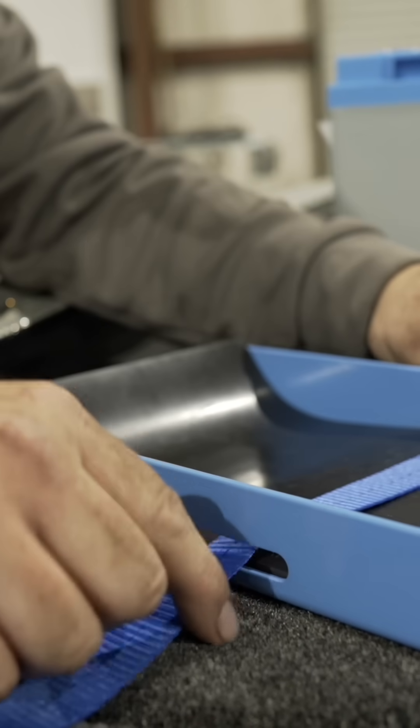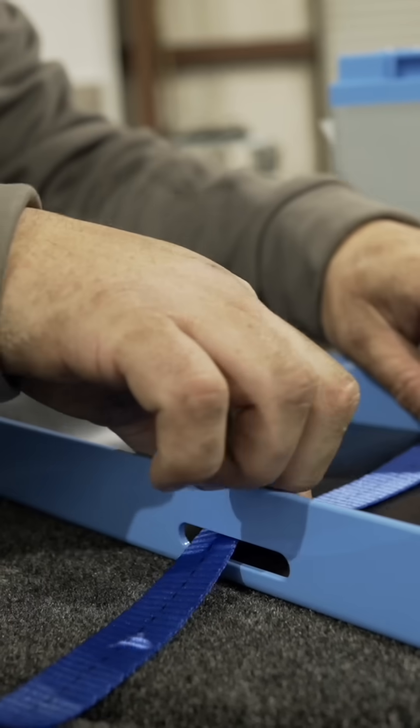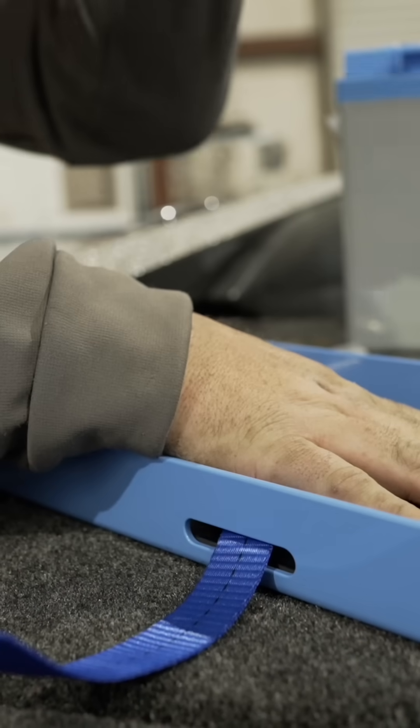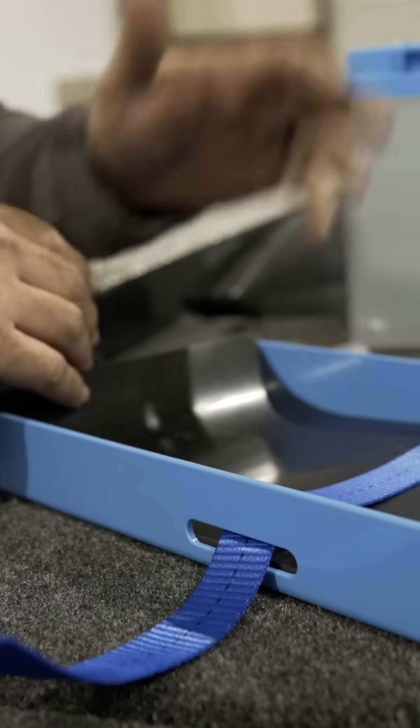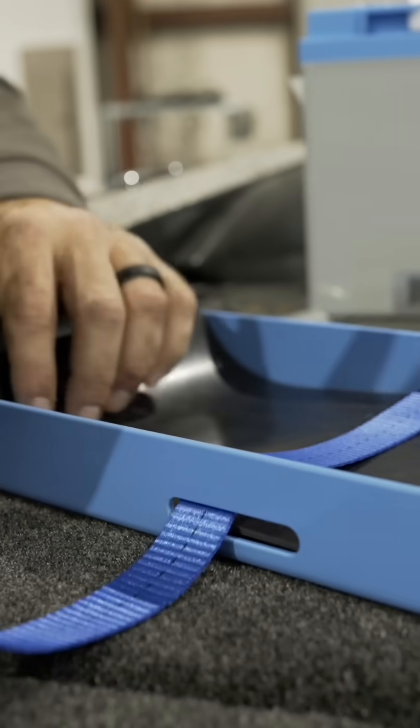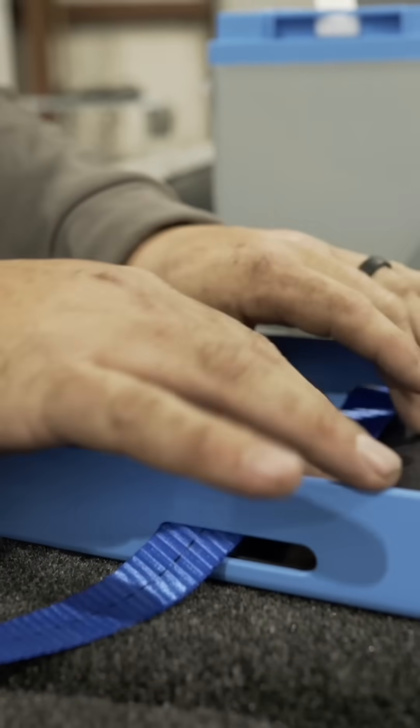The problem with that is as you tighten that ratchet strap, it's going to lift up on the bottom of the battery and essentially compress it, which will lead to seals going bad in the cases. It could crack the case, so it's very important when it comes to powerhouse lithium trays that you follow this process.